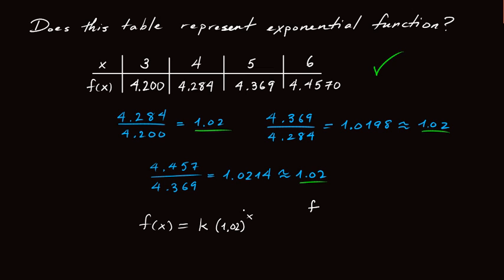I can plug in for x any one of these values, and I'll choose 3. So if I plug in for x, 3, well, f of 3 is 4.2. And if I plug in 3 here, I get 1.02 cubed, which you can put into your calculator, which I'll do right now. 1.02 cubed is 1.06.